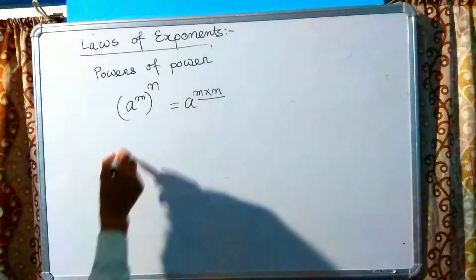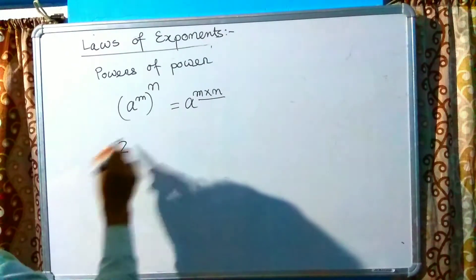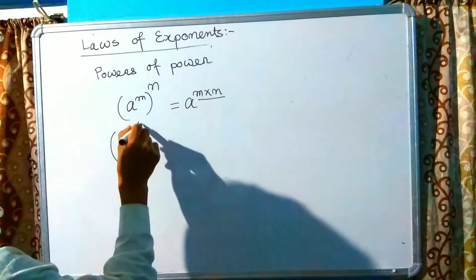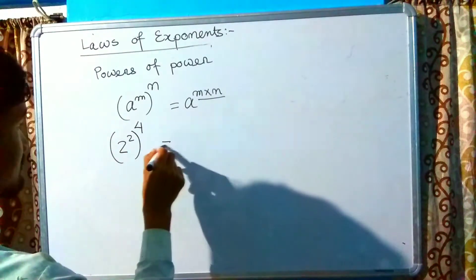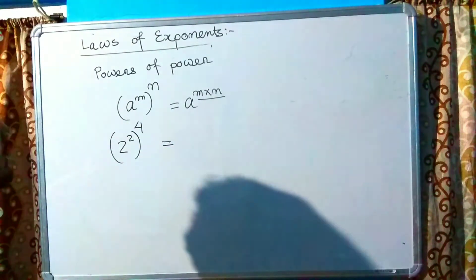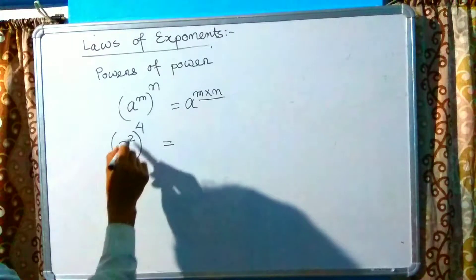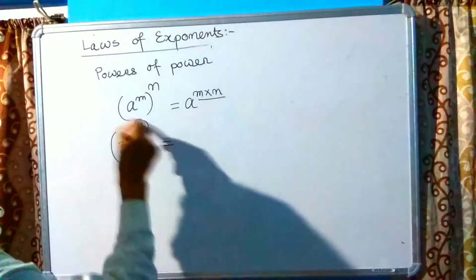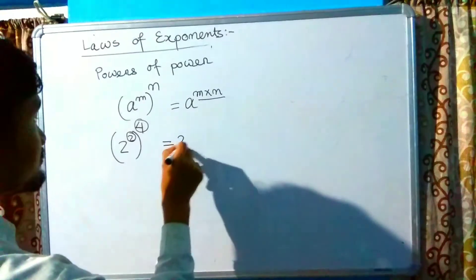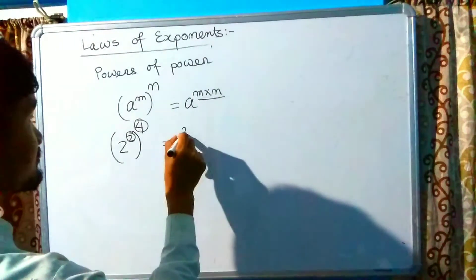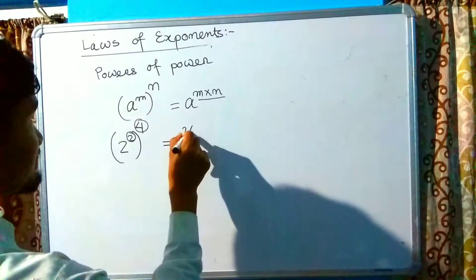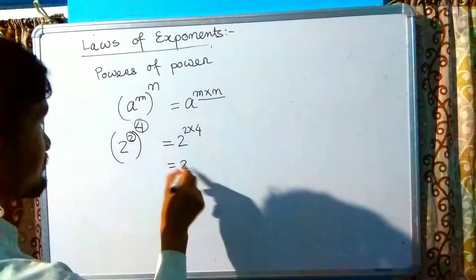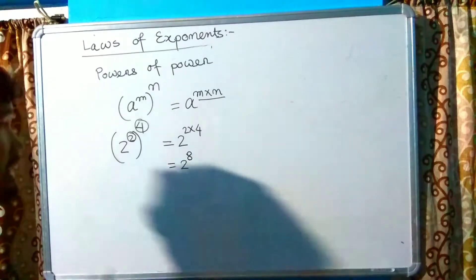Law 3 — Power of a power: (a raised to the power m) raised to the power n equals a raised to the power m multiplied by n. Example: 2 squared whole to the power 4 equals 2 raised to the power 2 multiplied by 4, which is 2 raised to the power 8.